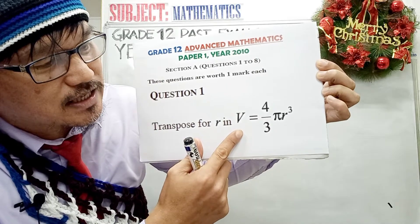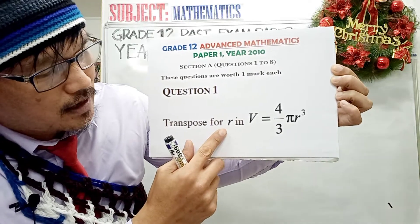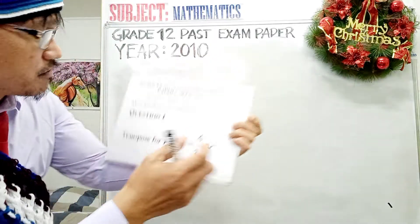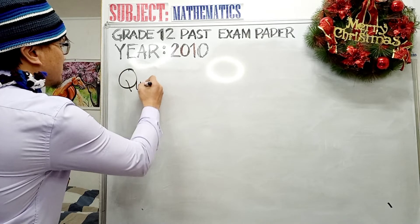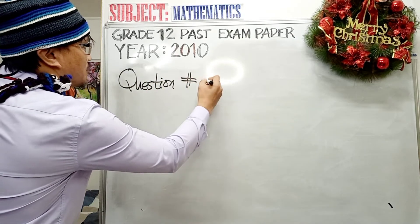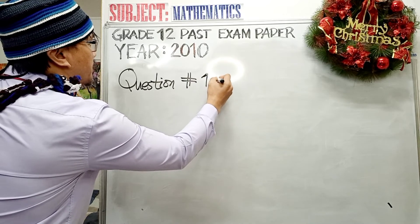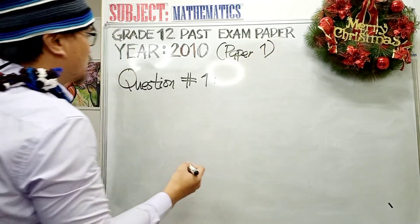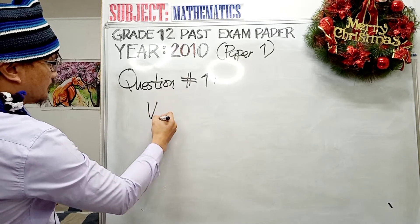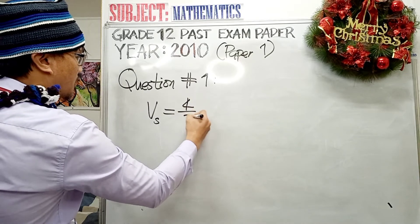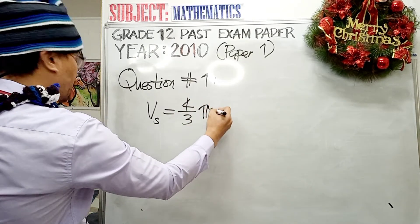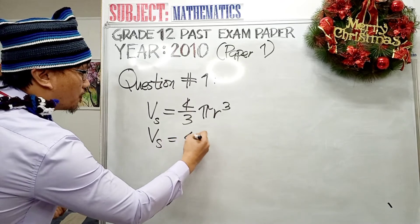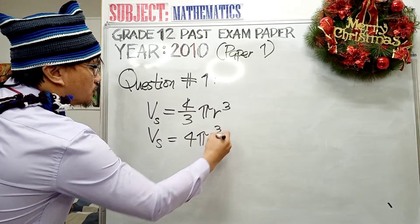In our given, this is the formula for the volume of a sphere. If you are given this formula for the volume of a sphere, you are asked to transpose it to make R the subject, and this is only worth one mark. So let's rewrite: the volume of a sphere equals 4 over 3 pi R cubed, which can be rewritten as V equals 4 pi R cubed all over 3.